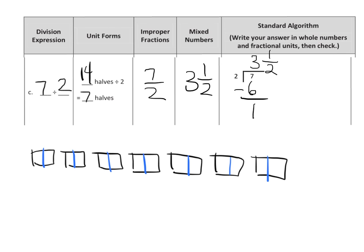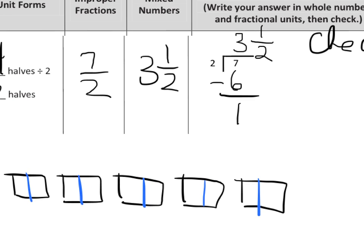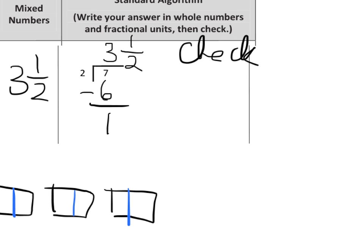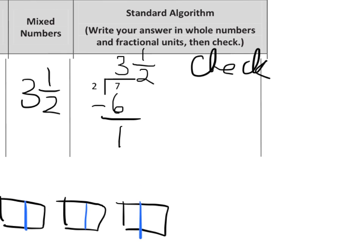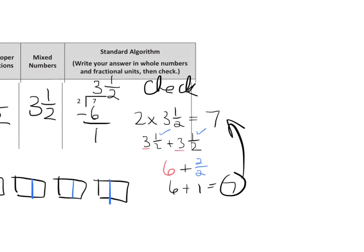Now I need to check it. So 2 times 3 and a half had better equal 7, because the way you check division is by multiplying. So 2 times 3 and a half is 3 and a half plus 3 and a half. So 3 plus 3 is 6, and then 1 half plus 1 half equals 2 halves, which is a whole. So we end up with 6 plus 1, which equals 7. That's exactly what we wanted, so we did the math correctly.